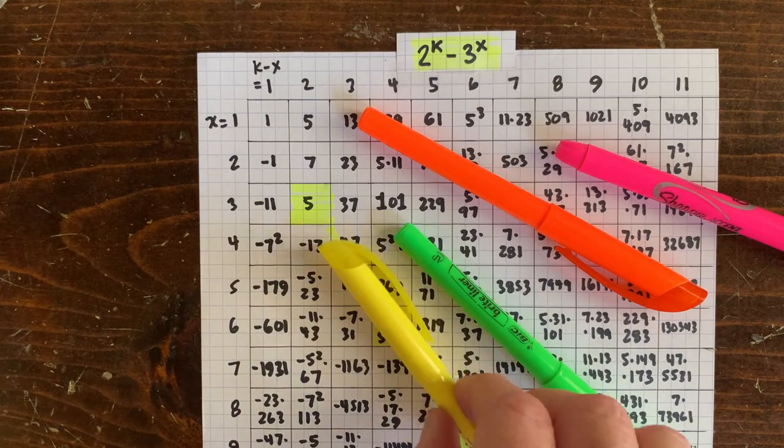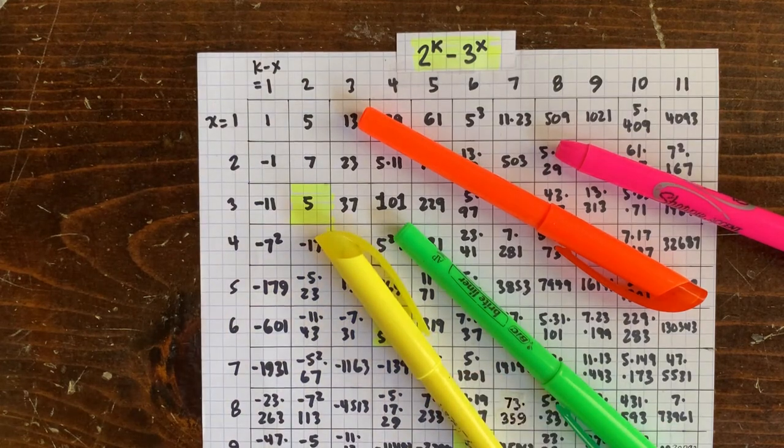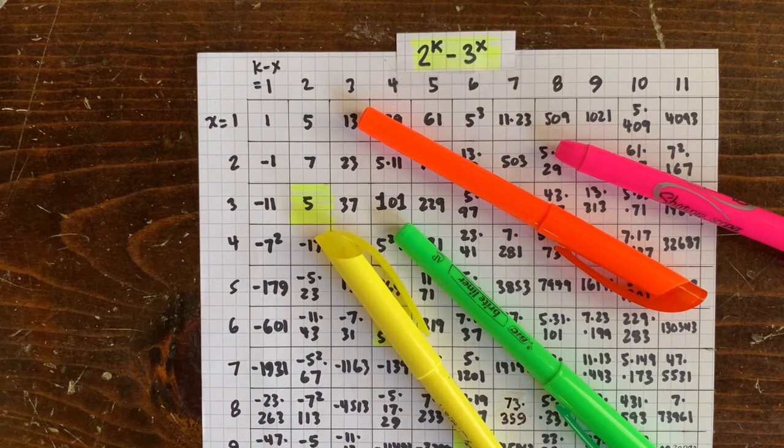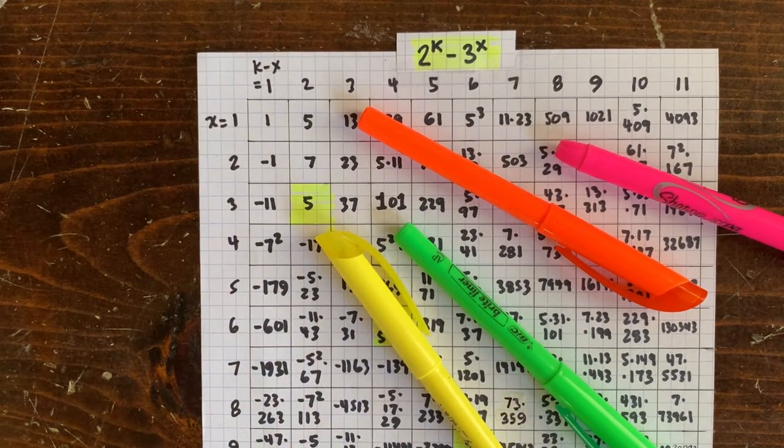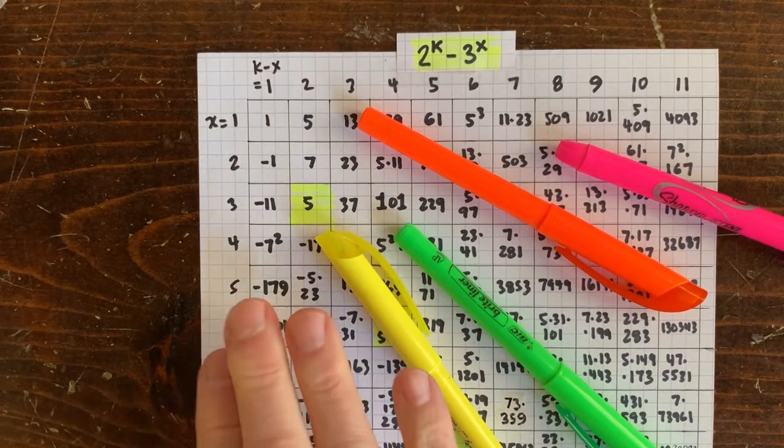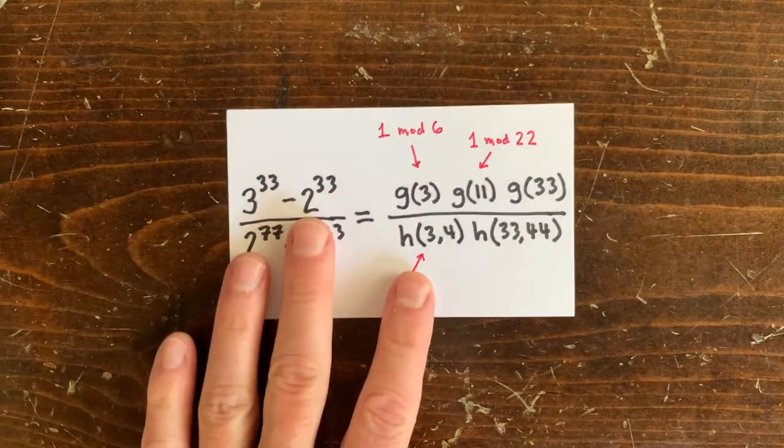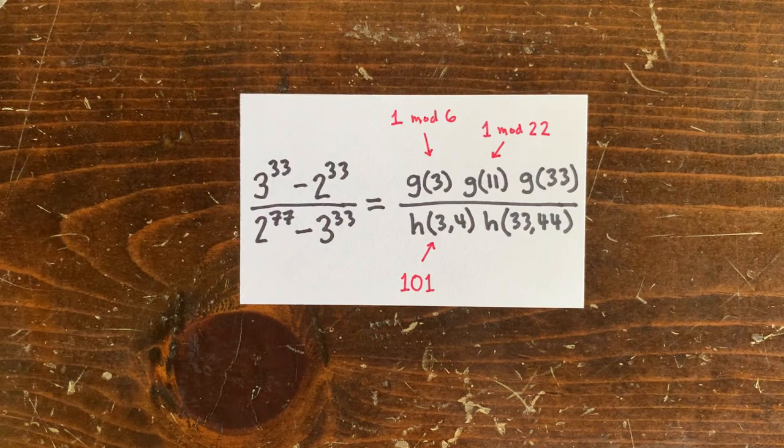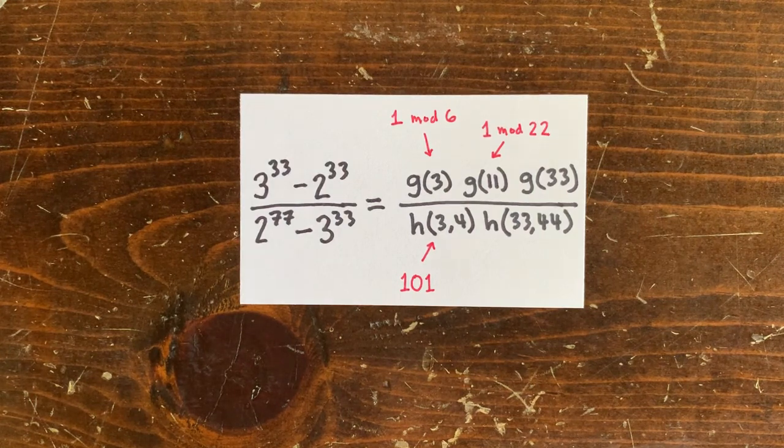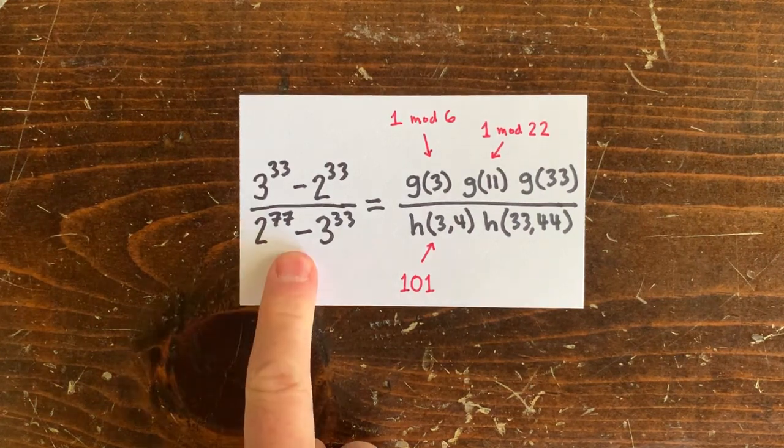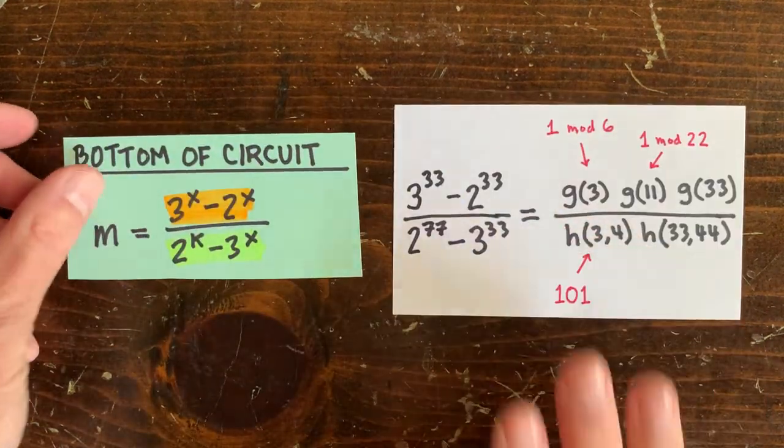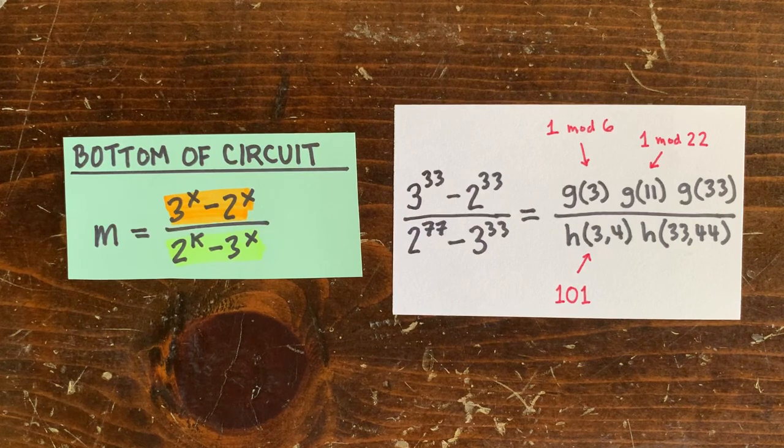Is 101 1 mod something? All right, that's going to have to wait. For now, we can take something like 3 to the 33 minus 2 to the 33 over 2 to the 77 minus 3 to the 33 and say, well, we might not know if this divides evenly.